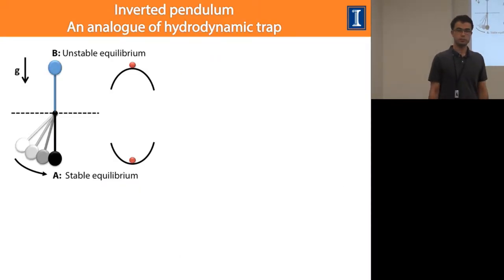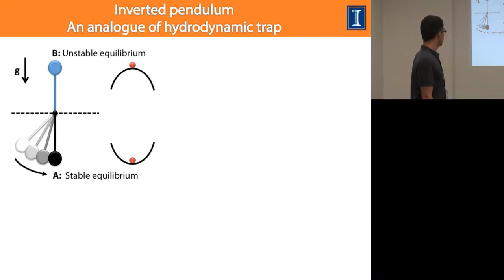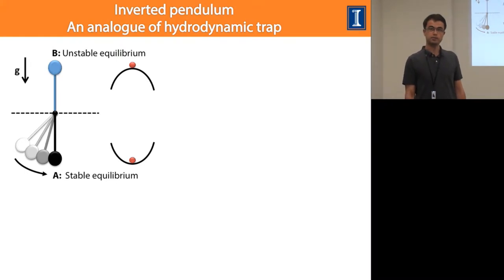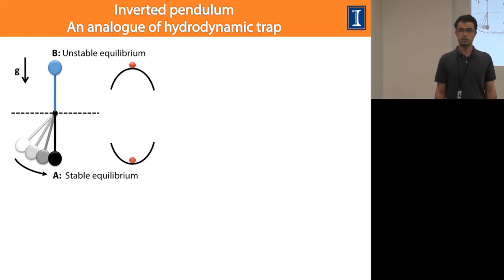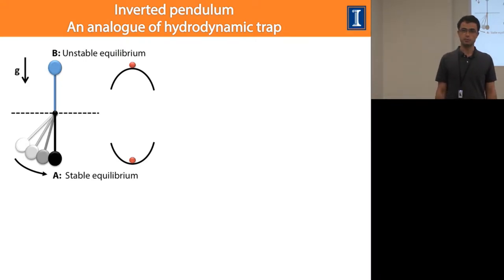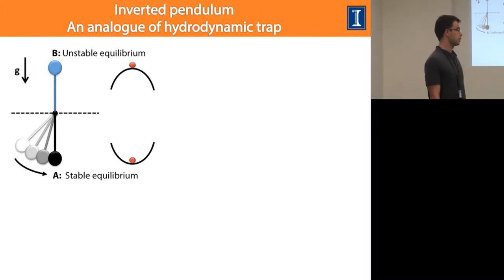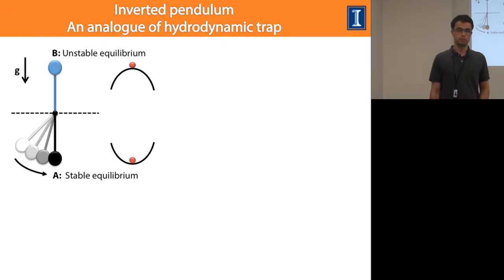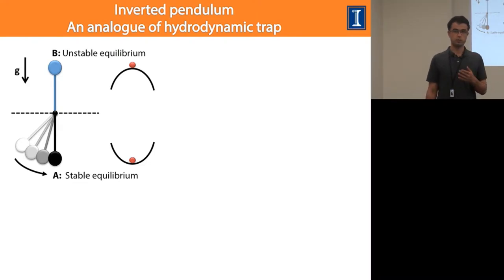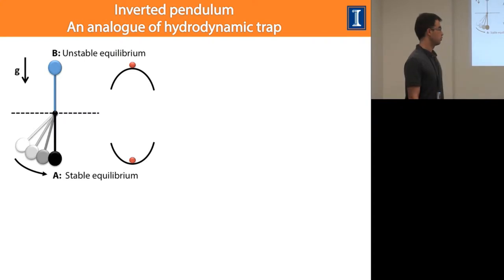One can draw an analogy between our system and an inverted pendulum. For a pendulum, there are two equilibrium points: one stable, pointing in the direction of gravity, and one unstable, opposite to gravity. In the stable equilibrium, if you perturb the system, it returns to equilibrium. In the unstable equilibrium — the inverted pendulum case — if the system is perturbed, it never returns to the original state.